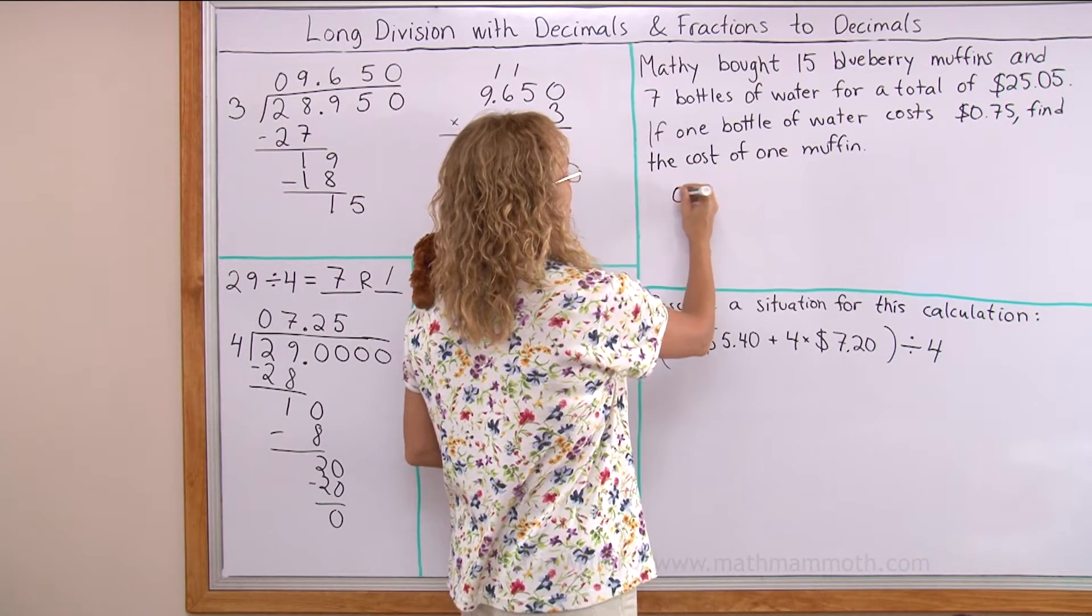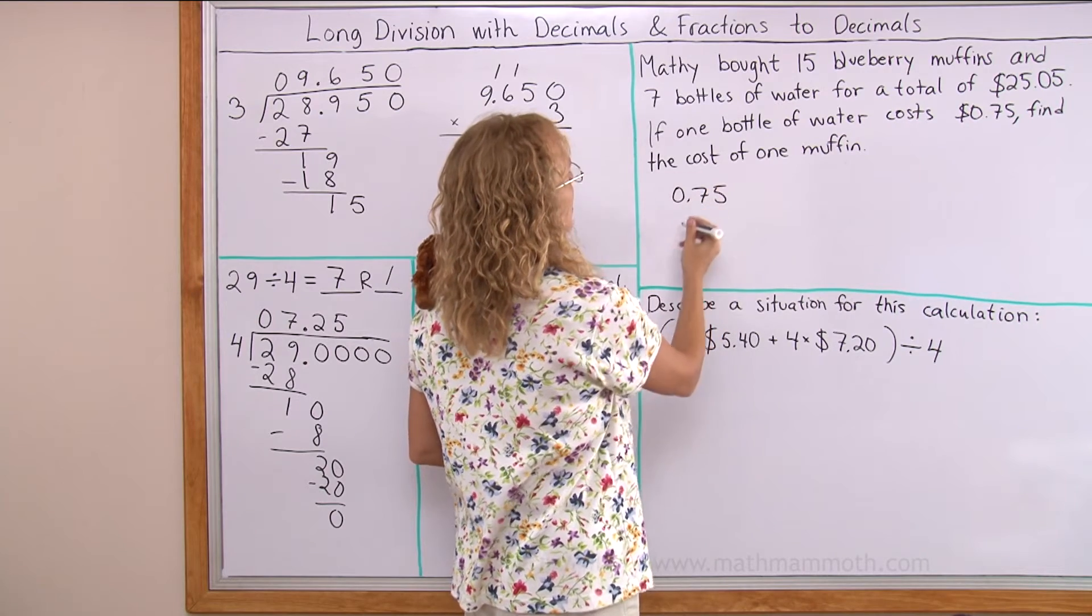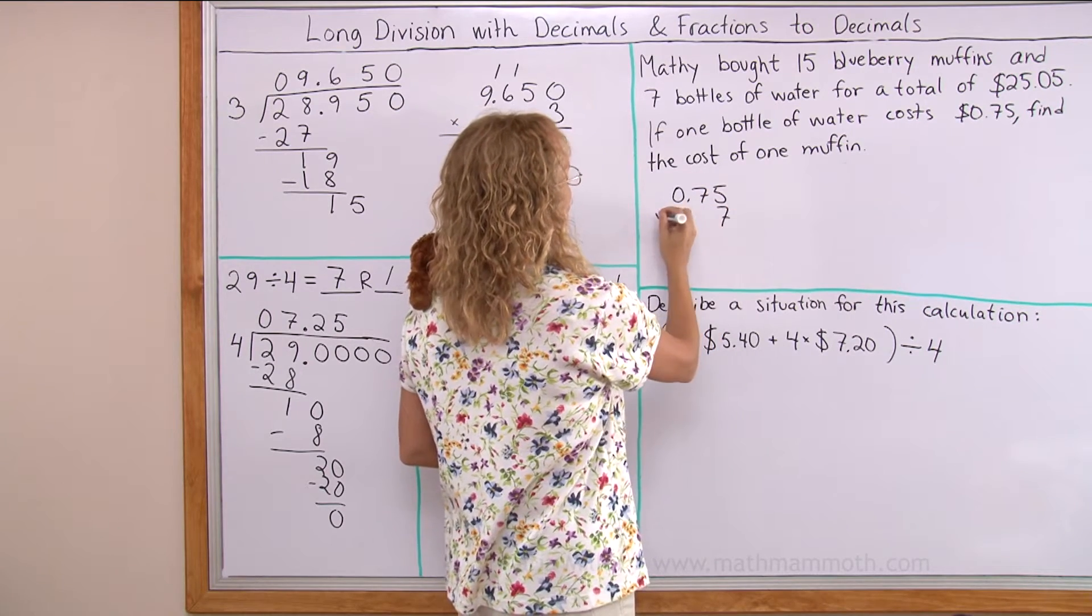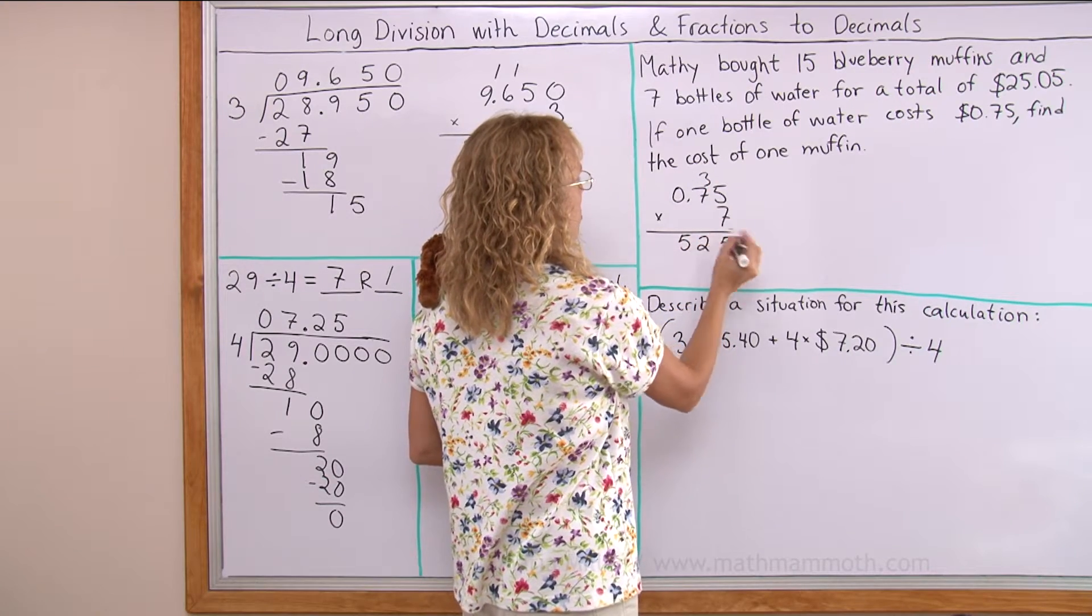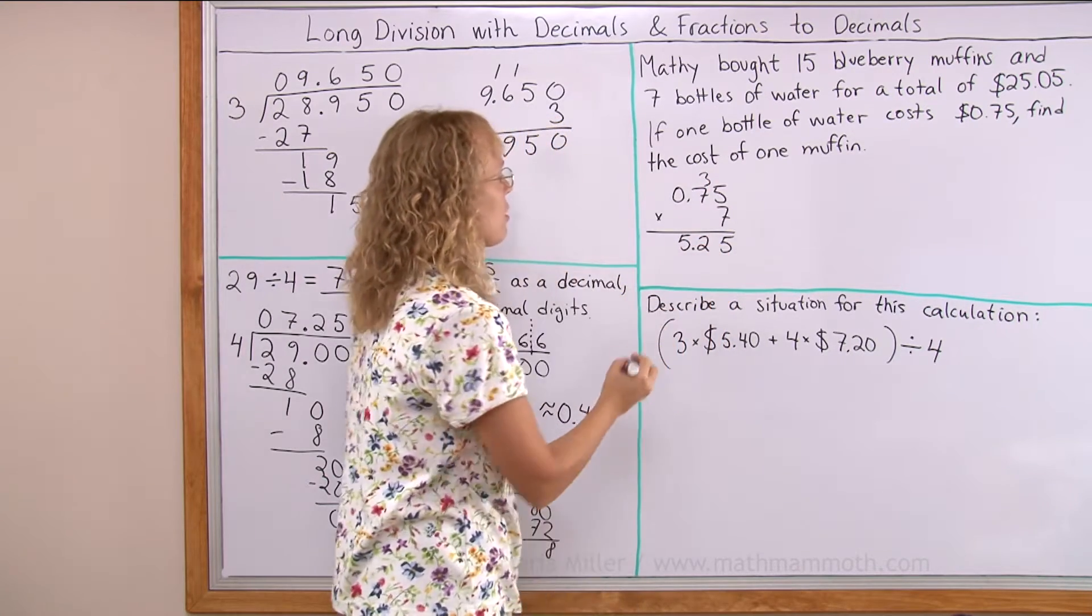One water was 75 cents and then there were seven of them, so we can solve how much these waters cost here. 35 and then 52. So $5.25.